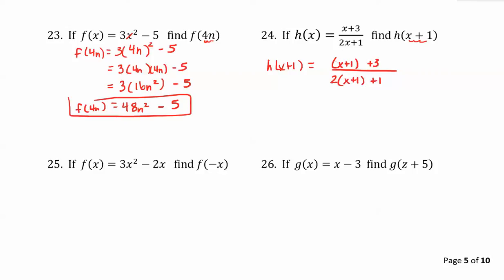Now we do need to simplify and clear any parentheses. So in the numerator, x plus 1 plus 3 is x plus 4. In the denominator, we can distribute the 2 to clear the parentheses. And that becomes 2x plus 2, 2 times x and 2 times 1. But we then have plus 1. So that simplifies to 2x plus 3. So h of x plus 1 is x plus 4 divided by 2x plus 3.